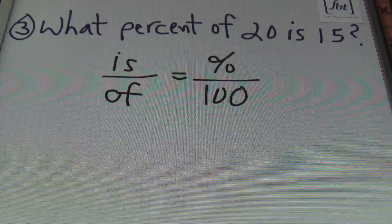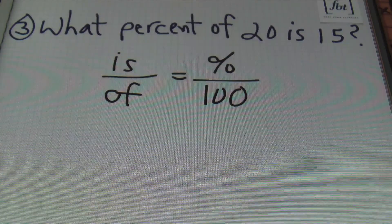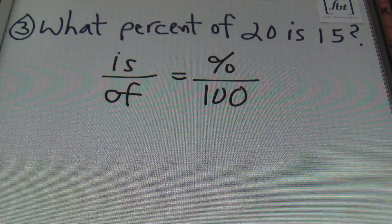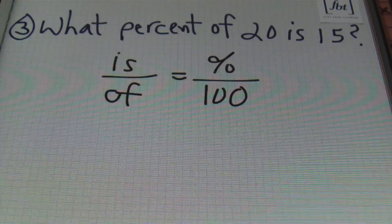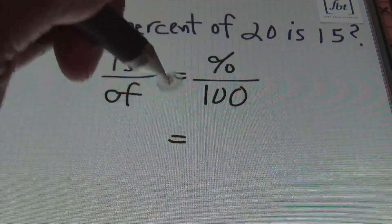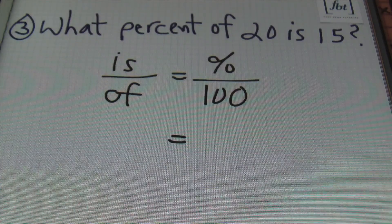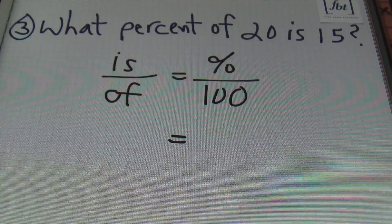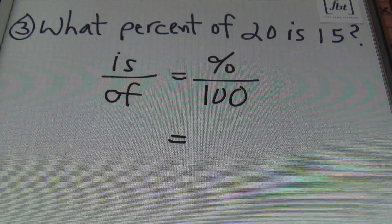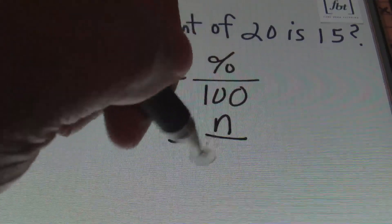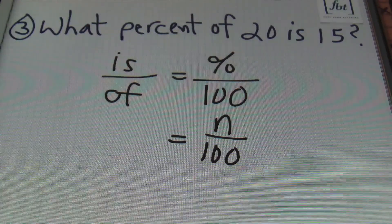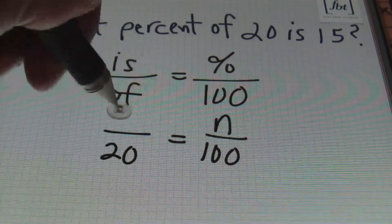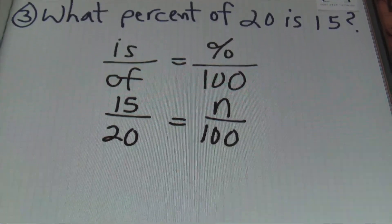So with problem number three here, I'm going to show you the same problem, this time using percent proportion. So I'm going to plug it into this equation of 'is' over 'of' equals the percent over 100. Remember, start with your percent first because it's the easiest thing to identify. And you know what? They're starting out with the word 'what percent' - you don't know what it is, so I'm going to use my variable n. I'll be saying n over 100 equals to 'of' is 20, so I'll put 20 in the denominator. 'Is' is 15, so 15 goes in the numerator.